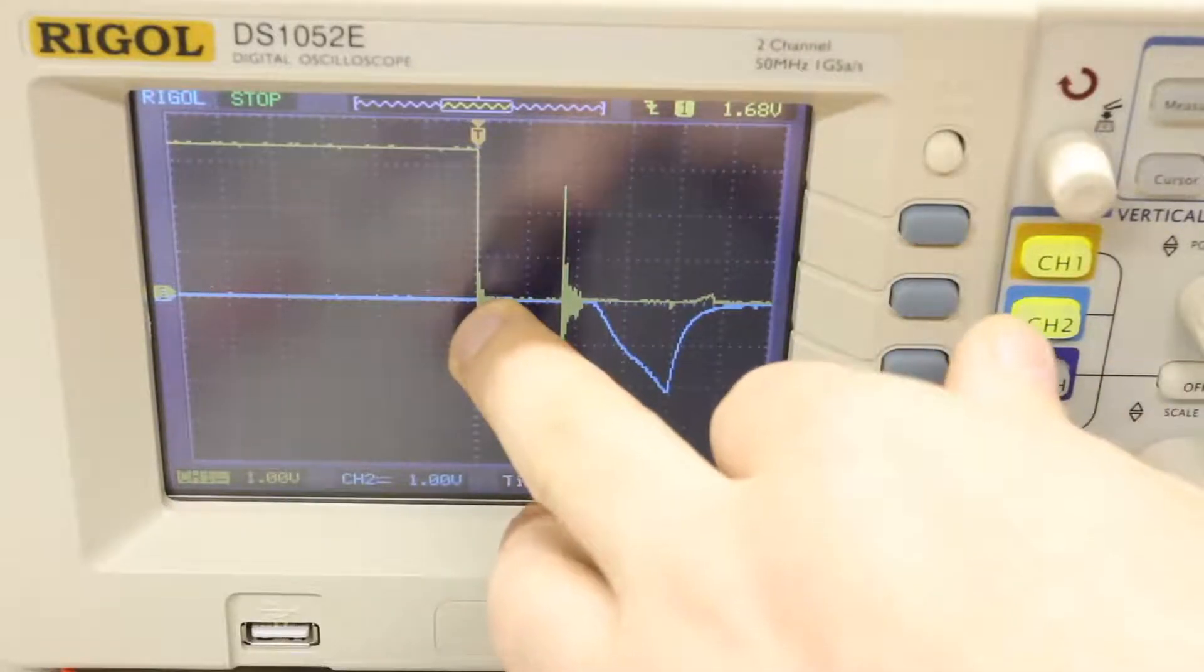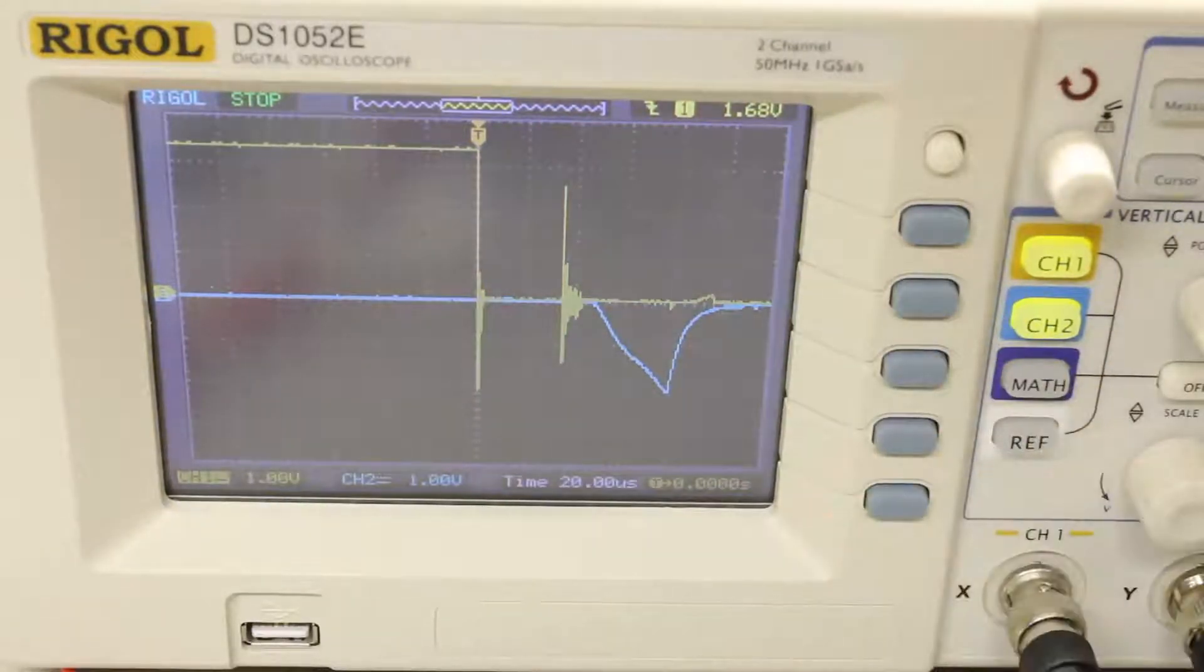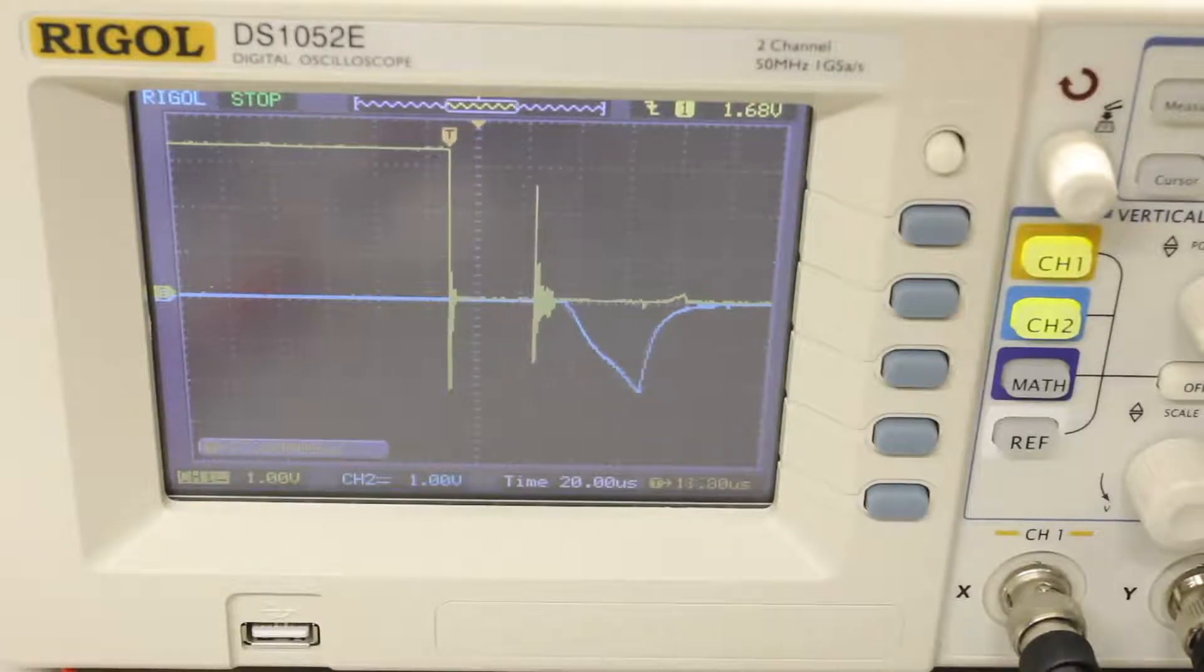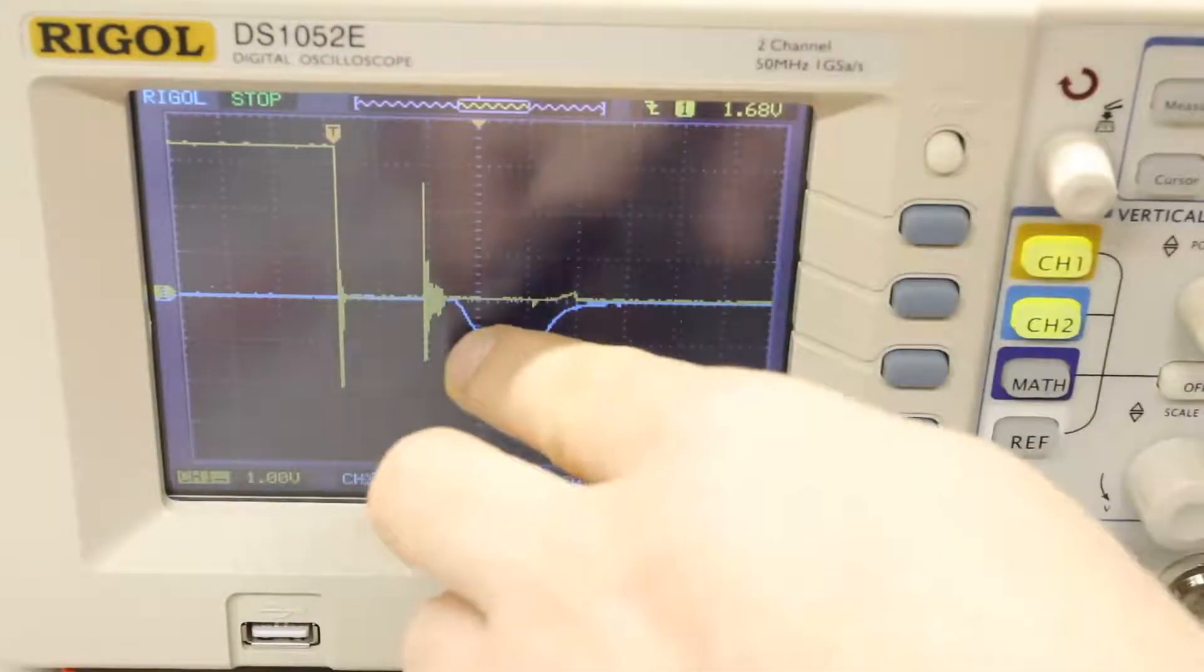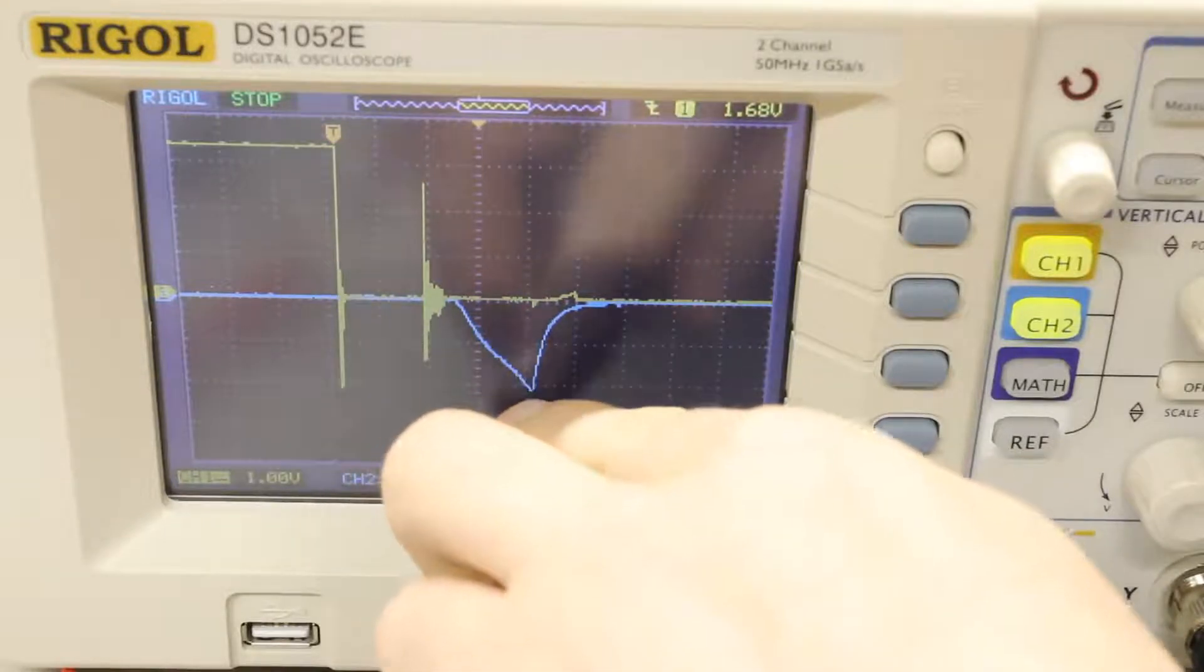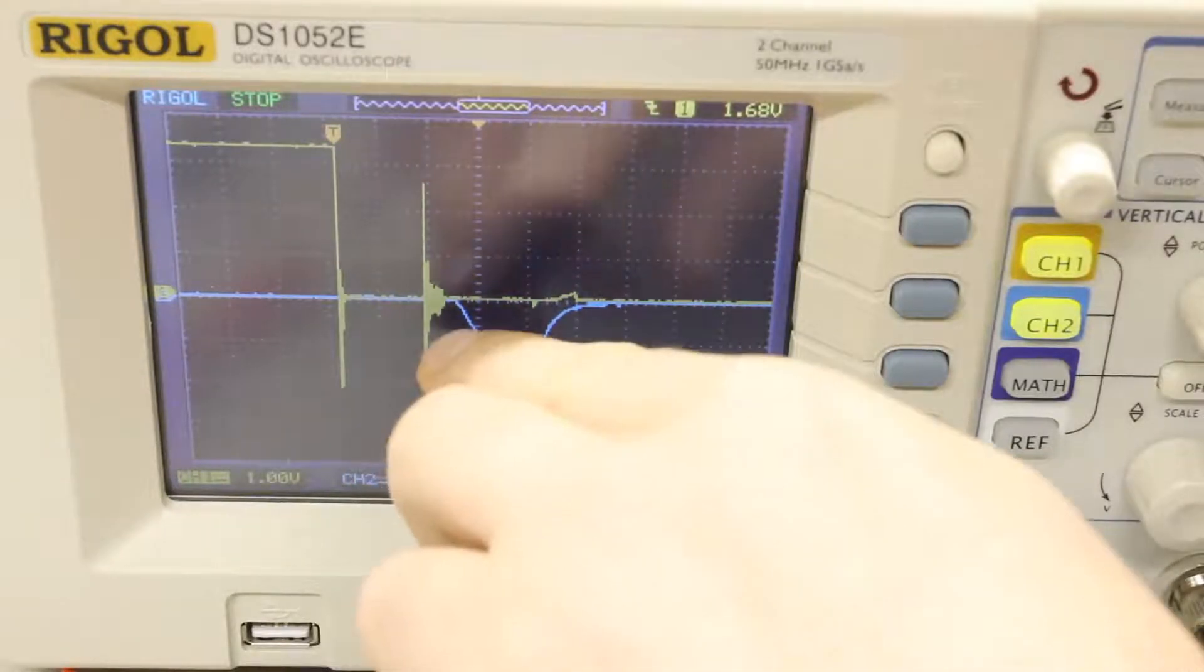So we know that this event happens at zero time on the oscilloscope. So if we just move the time over here we can see that at that point there's a decent amount of light being emitted. The farther down the blue line goes, the more light is being emitted.